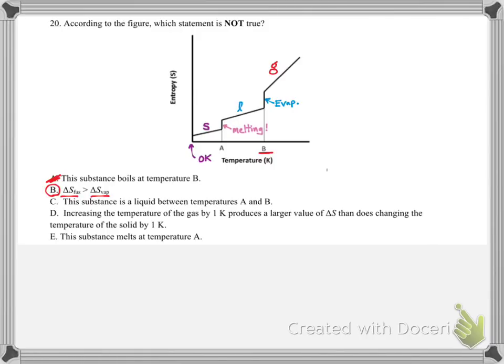Let's just go through the other three choices, though. This substance is a liquid between temperatures A and B. So between here and here, is it a liquid? That it is. So I like that in terms of being true. I don't like it in terms of being the answer, because we're looking for what's false. D, increasing the temperature of the gas by one Kelvin produces a larger value of delta S than the temperature of the solid. Well, just look at this slope versus this slope here. We can see that temperature has a much more dramatic impact once it's in a gaseous phase, because that's after we've overcome all the intermolecular forces. So this one is indeed true, meaning it's not our answer. And then finally, E, the substance melts at temperature A. Hey, look, it's melting at temperature A. So choice B is the false one.